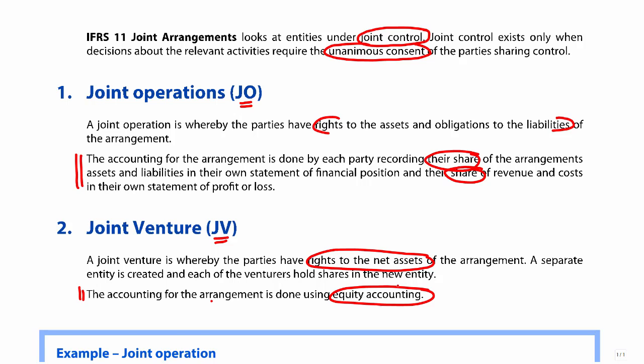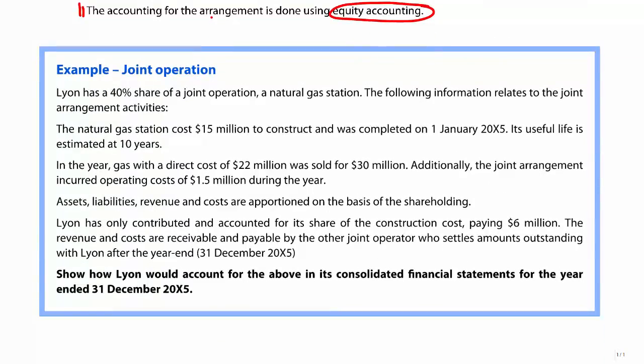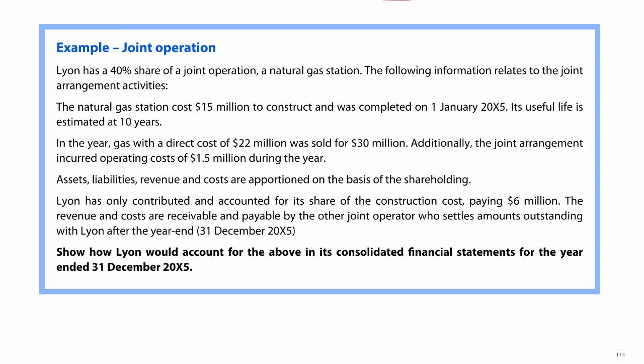It's the joint operation accounting that we need to look at and investigate. Looking at the example at the bottom of the page — 'show how LION would account for the above in its consolidated financial statements' — the position statement and performance statement for the year ended 31st December 20X5. LION has a 40% share of a joint operation, which is a natural gas station. The parties have come together to construct a natural gas station together, so you get your rights to the assets and obligations of the liabilities, and you will record your share of the revenue and costs incurred within this construction.